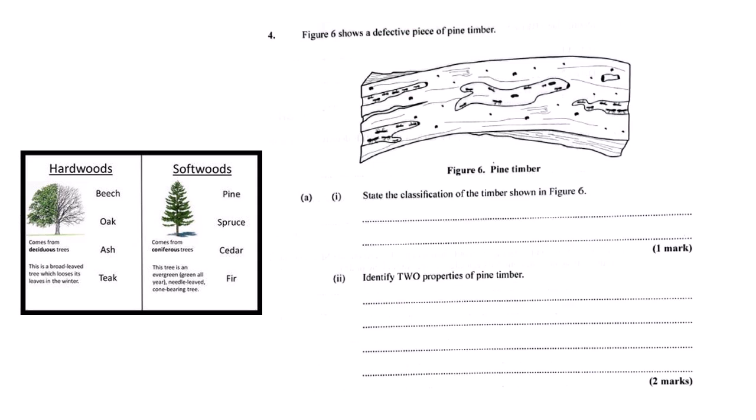What about downsides? That lower density means it can dent and scratch more easily than, say, oak. So maybe not ideal for a heavy-use tabletop. And the knots - they can look nice, add character. But structurally, they're interruptions in the grain, potential weak spots if you're not careful where you place them in a design. Interestingly, that relative softness actually makes it quite good at absorbing shock. Think packaging crates or even sometimes as a subfloor layer. It has a bit of give.